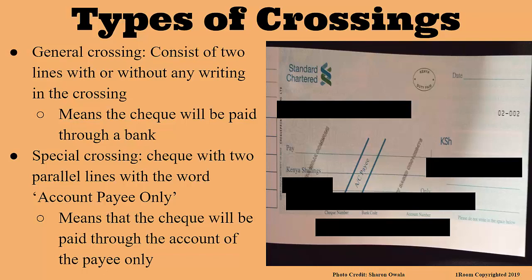As for special crossing, the two parallel lines contain the words 'account payee only.' And what does that mean? It means that the cheque will be paid through the account of the payee only.